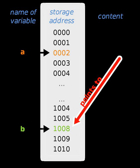In object-oriented programming, pointers to functions are used for binding methods, often using what are called virtual method tables. A pointer is a simple, more concrete implementation of the more abstract reference data type. Several languages, especially low-level languages, support some type of pointer.